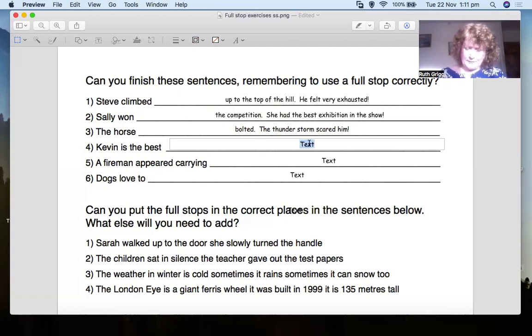Kevin is the best. The best what? I'm going to put runner. He wins every race. Every race in his year. I'm going to put the cat. There you go. Kevin is the best runner. So explain what this is about. It's about Kevin. What's he best at? Being a runner. Full stop. He wins every race in his year.